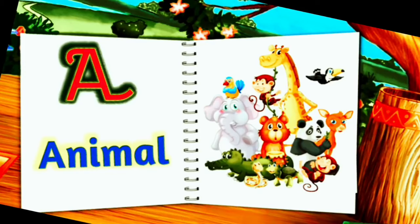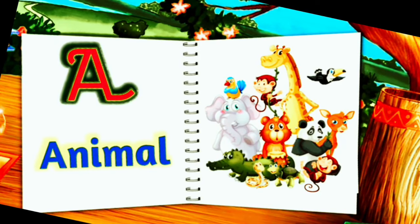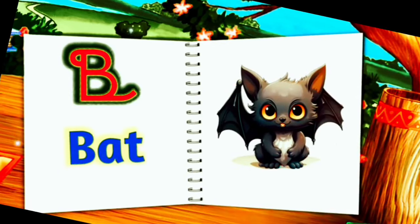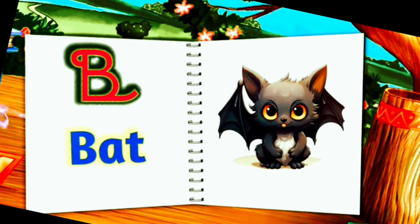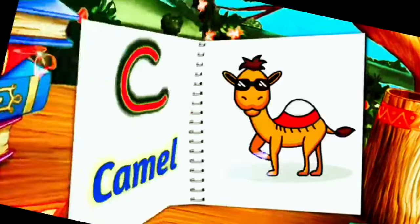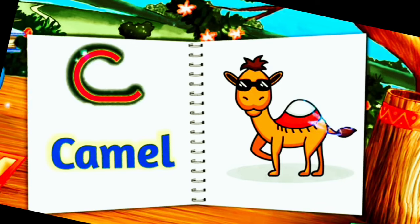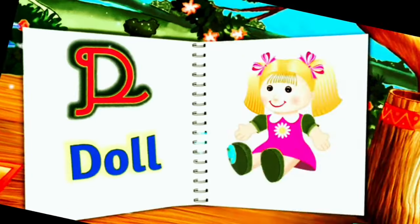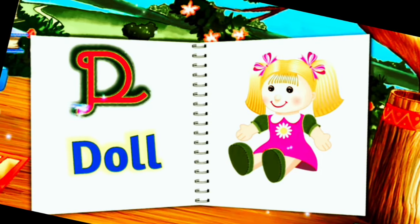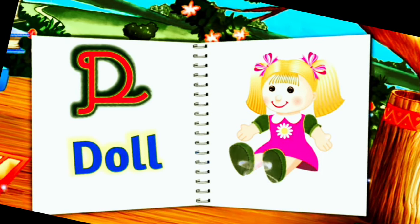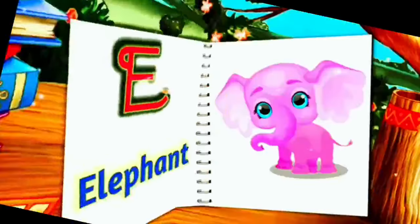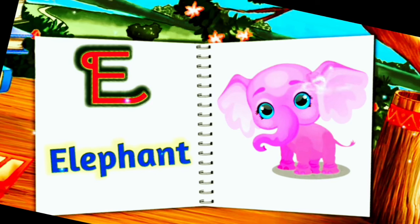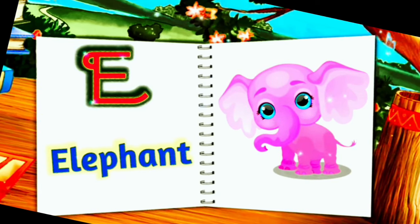A for Animal, A-N-I-M-A-L, Animal. B for Bat, B-A-T, Bat. C for Camel, C-A-M-E-L, Camel. D for Doll, D-O-L-L, Doll. E for Elephant, E-L-E-P-H-A-N-T, Elephant.